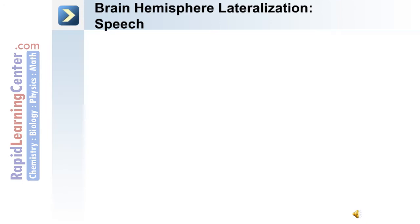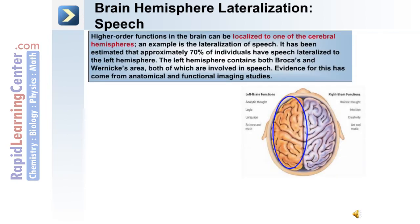As mentioned earlier, the brain is divided into two hemispheres, and special functions such as speech can be lateralized to one hemisphere. Higher order functions can be localized to one of the two cerebral hemispheres. An example is the lateralization of speech.